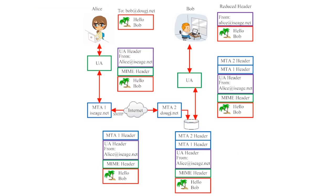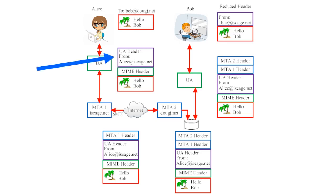Every email keeps an official record of what it is and where it's been. When Alice first composes the email, all it contains is a message and an address. However, once she hits send, her user agent will attach a header that gives the recipient more information. It will add a return address, which shows the recipient who the email came from. It will also add something called a MIME header.